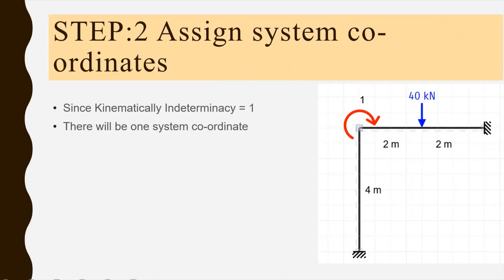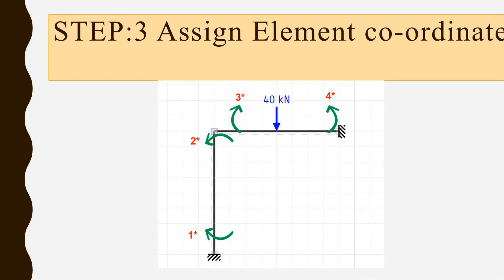The second step is to assign system coordinates. A system coordinate is assigned at the point where we have a degree of freedom. In this structure, both supports are fixed, so there is no degree of freedom at those supports. The only degree of freedom occurs at the middle joint B. Therefore, we assign one system coordinate — representing a moment — at that free joint.